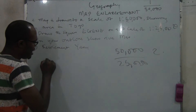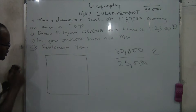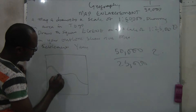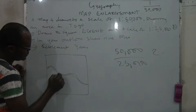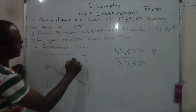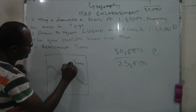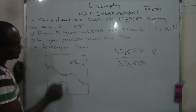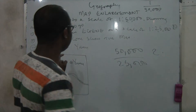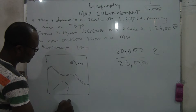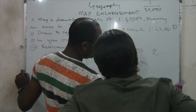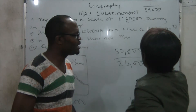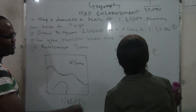Let's say that this is the map showing the place in Togo. This is the road in Togo, and they say you should establish the settlement. This is the river, and this is the road. Now, the scale is 1:50,000. Draw this map to a scale of 1:25,000. By the way, between 1:50,000 and 1:25,000, the smaller-looking number is always the bigger scale.